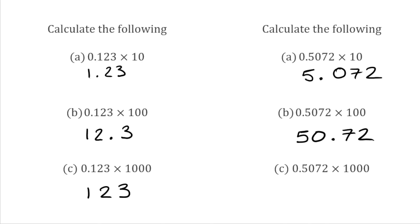For the very final example, we've got 0.5072 multiplied by 1,000. Because we're multiplying by 1,000, there are three zeros so we move three spaces to the left. The 5 makes it over the decimal point, the 0 makes it over, and so does the 7. We're left with 507 on the left of the decimal point, and we've still got the 2 on the right. So the final answer is 507.2. That's it for today's video — I hope you found it useful. Please feel free to leave a like and consider subscribing, and let me know in the comments if there are any topics you'd like me to cover. Thank you very much for watching, and I'll see you in the next video.